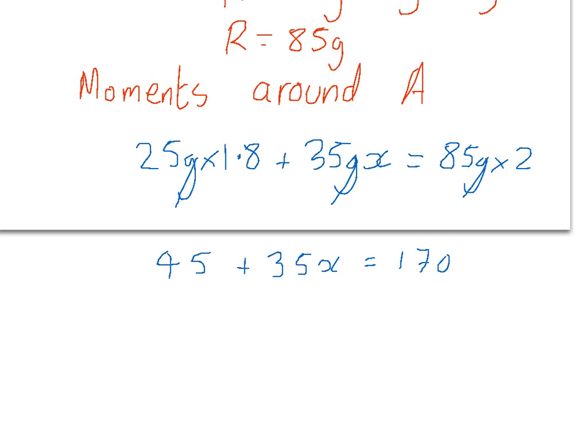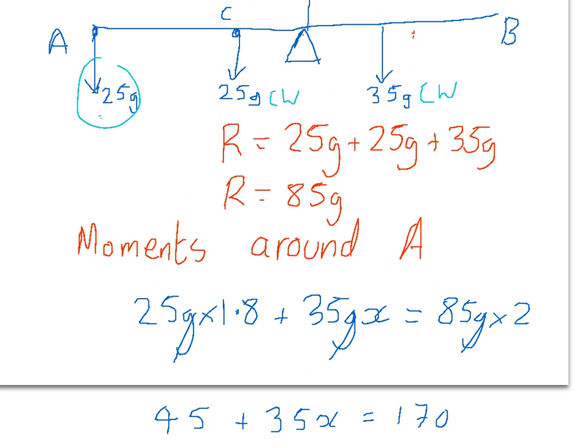Let's solve this. Take away 45 from both sides. So finally, x is equal to 3.557 meters, and that is the distance from A up until Sam.